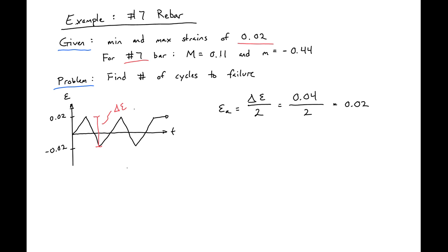If you have an equal max and min, epsilon a will just be equal to the absolute value of your minimum and maximum strains. Then we can find the number of cycles.